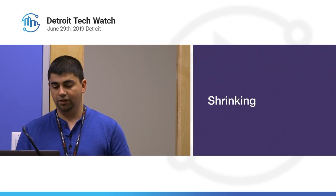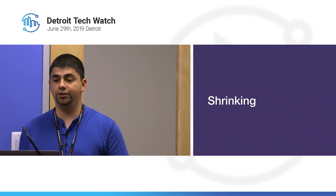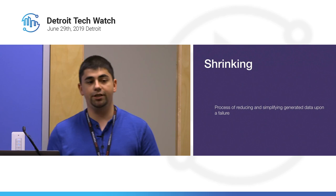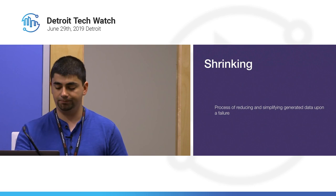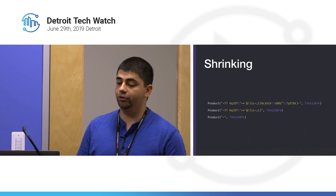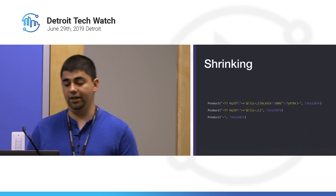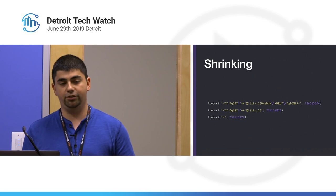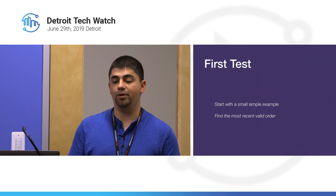You might be thinking: if generators produce all this complicated data, does that make it harder to debug? It definitely does, but there's a great thing called shrinking. Shrinking is the process of reducing and simplifying generated data upon a test failure. If a generated product causes a failure, it will try to run again with simpler input, and if it fails again, simplify further — really trying to narrow down the root cause.